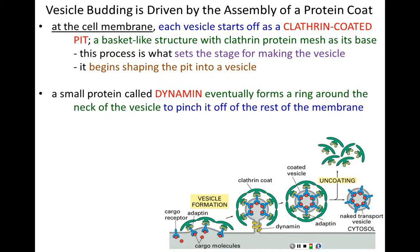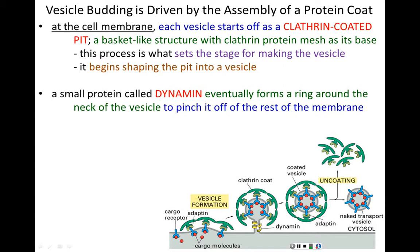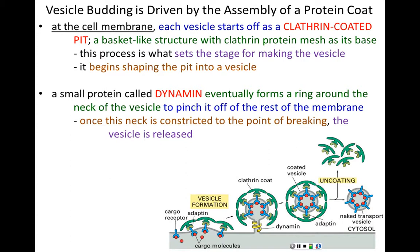The next protein needed is dynamin. As this clathrin-coated pit gets deeper, dynamin constricts or squeezes off what we call the neck of the vesicle. This squeezing off closes the vesicle and keeps the molecules inside trapped. Dynamin continues to constrict until the cell membrane is brought past its breaking point. Once this breaking point is reached, the vesicle snaps off the cellular membrane — a completely enclosed vesicle made up of membrane, with cargo inside and clathrin coating the outside.